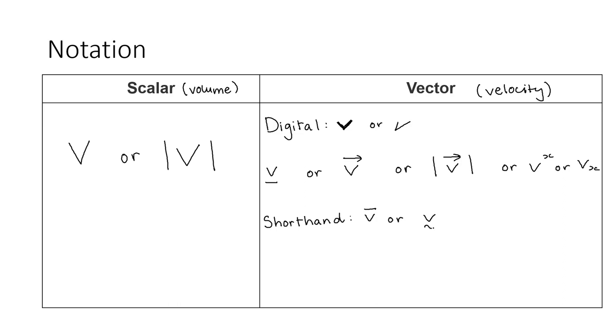Shorthand notation is also used when writing as it is hard to do bold or italics. These include putting a dash on top of the letter or a tilde sign above the letter, which can also be put below the letter.